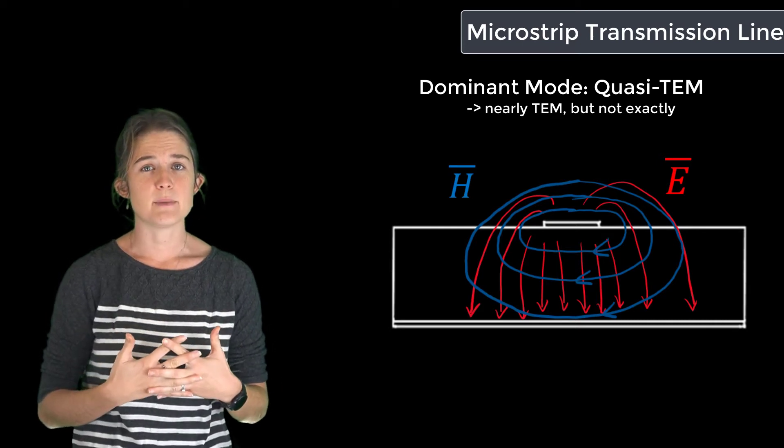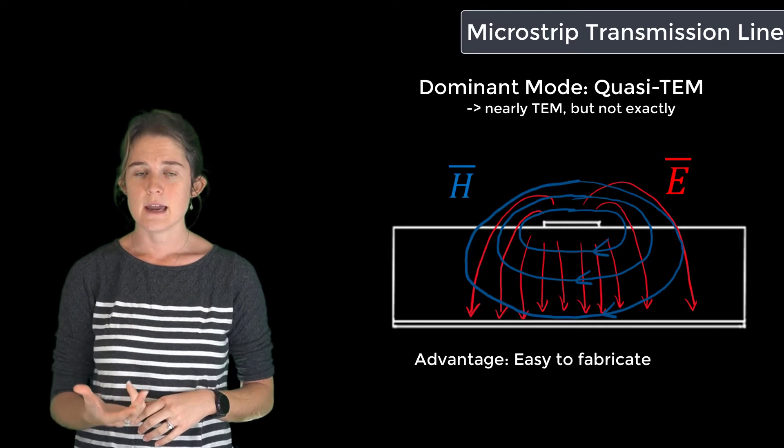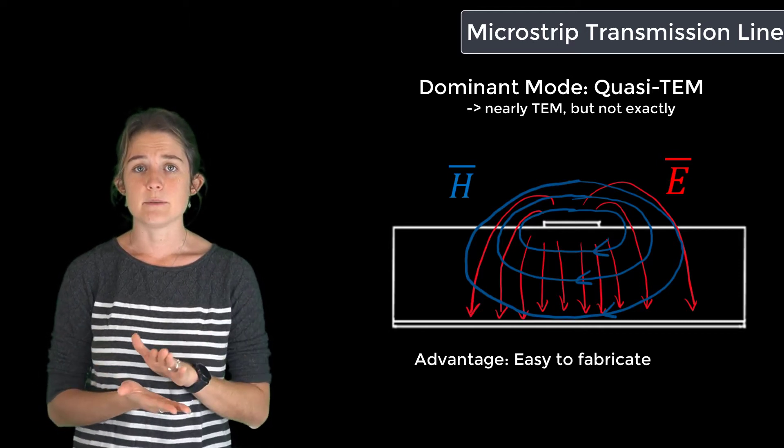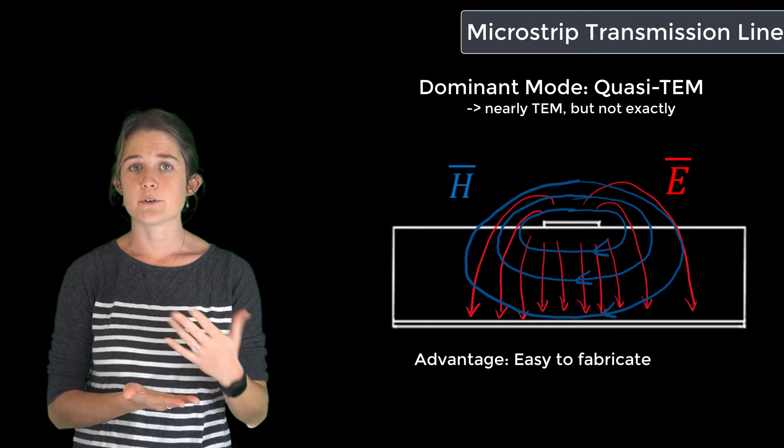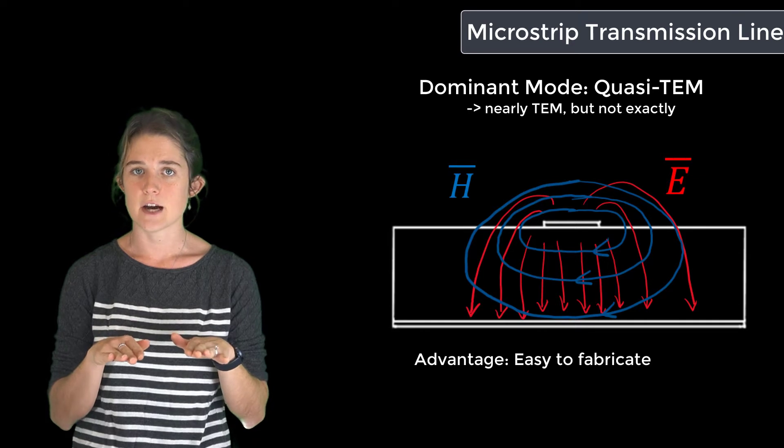Perhaps the best thing about the microstrip transmission line is that it is easy to fabricate in-house and to customize to your own requirements. All you need is a double-sided PCB, and then you can use photolithography or a milling machine to remove the unneeded conductor from the top side of the board.